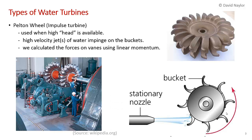Since I did an example on turbines, I'll end by talking about water turbines used for electrical power generation. The three main types are the Pelton Wheel, the Francis Turbine, and the Kaplan Turbine.